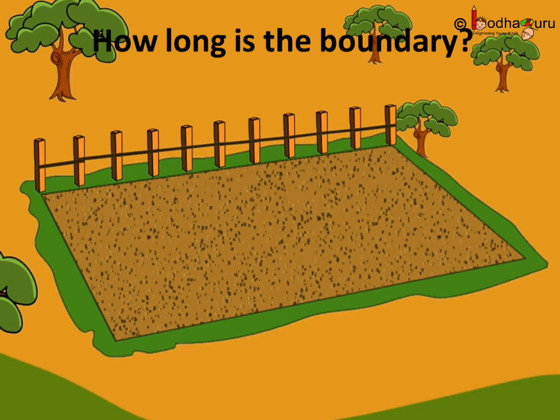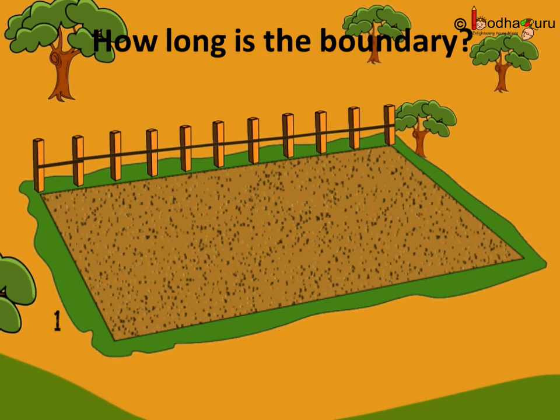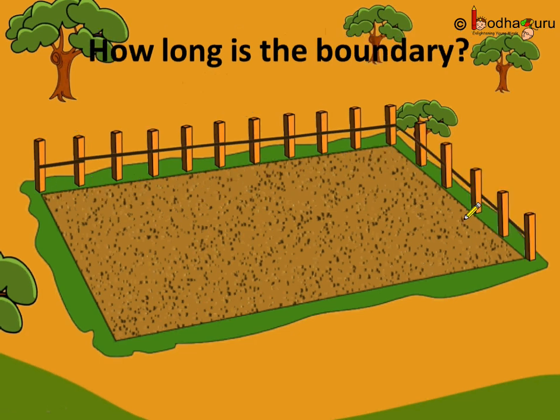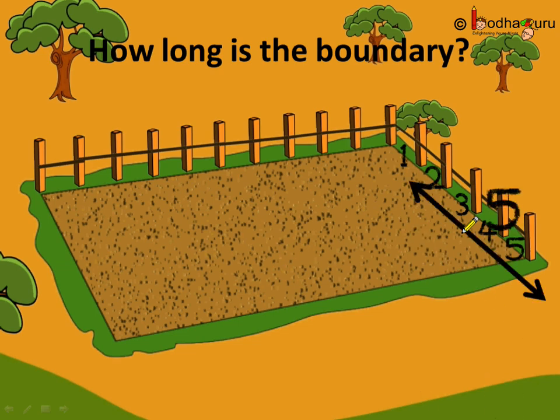Let us see how he did it one by one. So he put 1, 2, 3, 4, 5, 6, 7, 8, 9 and 10 pieces of wire. He put 5 pieces of wire on this side. So the total number of wire used on this side is equal to 10. Now coming to the next side, he put 1, 2, 3, 4, 5 pieces of wire. So the number of wire pieces used here is equal to 5.